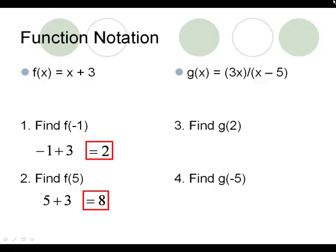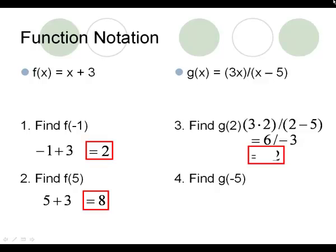Look at numbers 3 and 4. Try to plug the value 2 in as x into the g equation, and then plug negative 5 in as x to the g equation. Pause the video until you're ready to go through these together. Plugging 2 in as x into the g equation means we do 3 times 2, and then divide that by 2 minus 5. 3 times 2 is 6, 2 minus 5 is negative 3, and when I divide 6 divided by negative 3, I get negative 2 for a final answer.